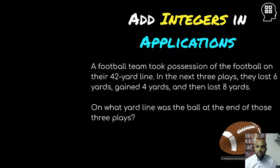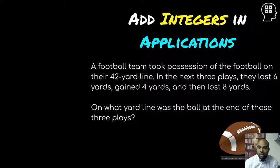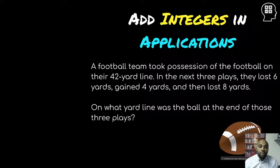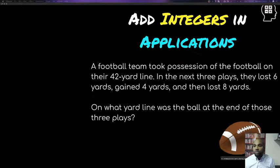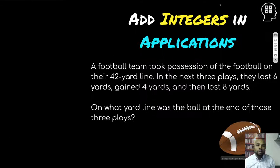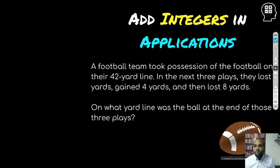A football team took possession of the football on the 42-yard line. In the next three plays, they lost six yards, gained four yards, then lost eight yards. The question is: on what yard line was the ball at the end of those three plays? I want to show you how to answer these problems and what steps to go through.